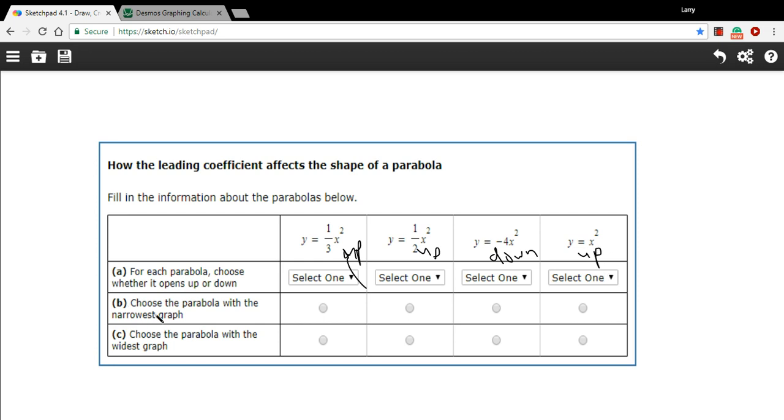Let's look at B. It says, choose the parabola with the narrowest graph. And remember, the bigger the number we put in front of it, the narrower it got. So here we've got one third, one half. Those are wider parabolas. Here's a negative four. So that's going to be a pretty narrow downward facing parabola. There's our basic one at one. So this is the number with the biggest magnitude in front of the x squared. So this is going to be our narrowest graph.